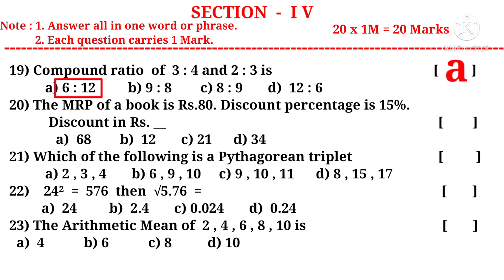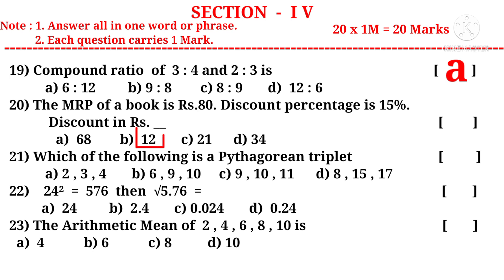Question 20: The MRP of a book is 80 rupees. Discount percentage is 15%, then discount in rupees is. Write MRP into 15%, that is 80 × 15/100. On simplification by 20: 24. By 5: 4 × 3 is rupees 12 is the discount rupees. The correct choice is B.